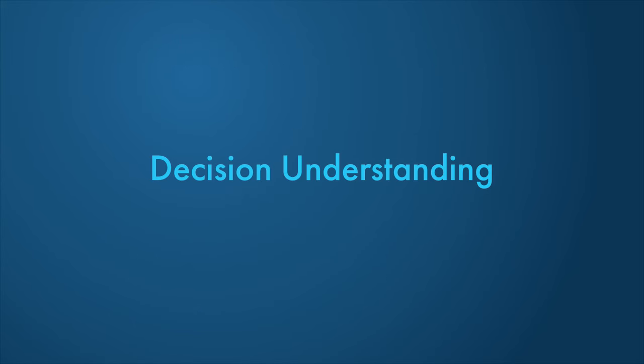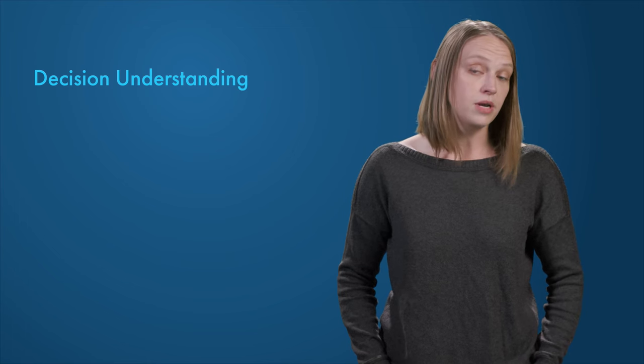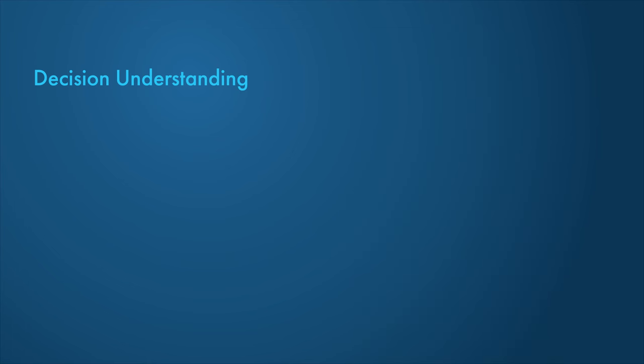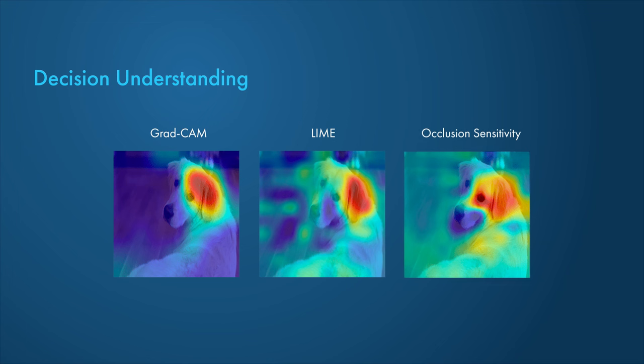Explainable AI techniques are useful when you are using models that are not inherently explainable, such as a deep learning model. In this case, popular techniques such as GradCAM, Lime, and occlusion sensitivity can be used to visualize which features of the input influence the decision of the AI model.